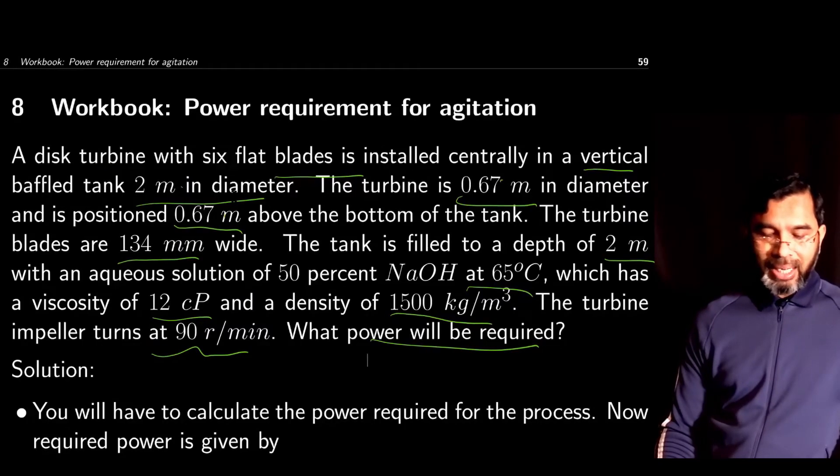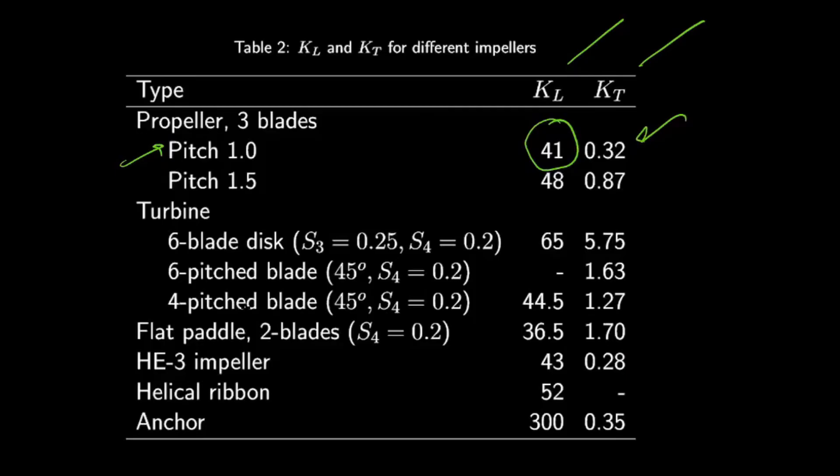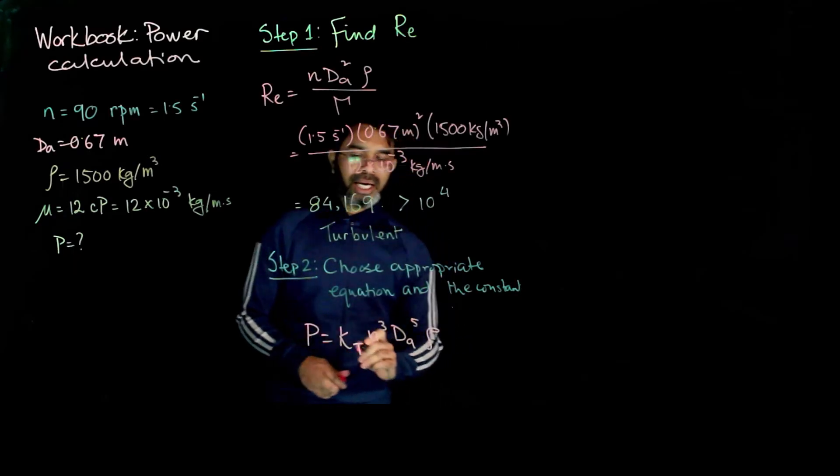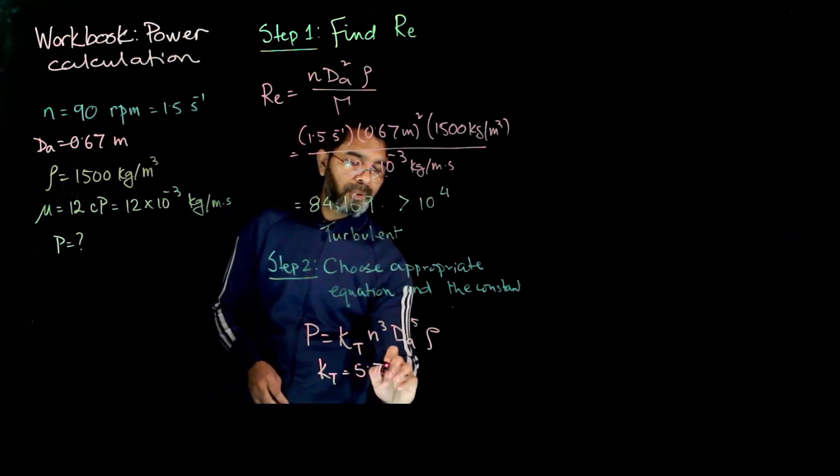For this case, we have a disc turbine with six flat blades. For a turbine with six flat blades, the value of KT is 5.75. From the table, we get KT = 5.75.